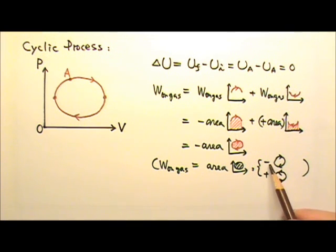And the work done on the gas is negative if the process is clockwise. The work done on the gas is positive if the cyclic process goes counterclockwise. Because if it's clockwise, that means there is more negative work done than positive work done.